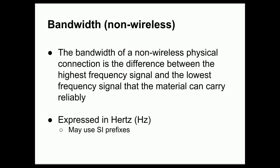So the way that we measure bandwidth depends upon whether we're talking about a cabled or wired connection or a wireless connection. The bandwidth of a cabled or non-wireless connection is the difference between the highest frequency signal and the lowest frequency signal that the material can carry reliably, and this difference is expressed in hertz, but we can use SI prefixes as shorthand to abbreviate, say, 1000 hertz as one kilohertz.